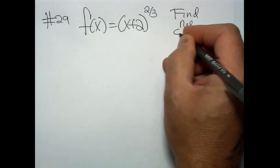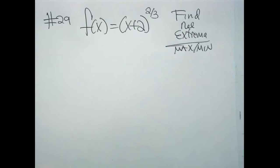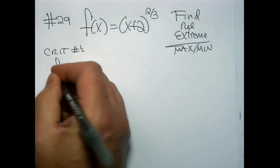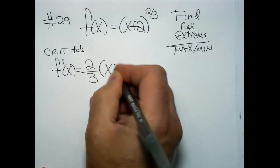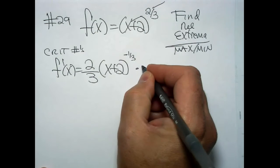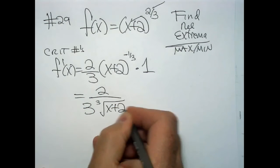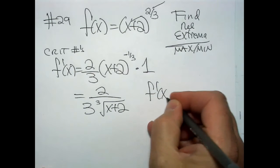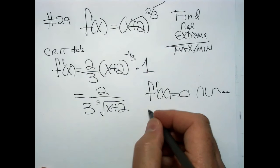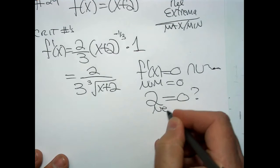Find the relative extrema — both maxes and mins. Let's find f prime. The two-thirds drops down, deduct one from the exponent giving negative one-third, and chain rule says multiply by one. So f prime = (2/3)(x + 2)^(−1/3). For critical numbers where f prime = 0, set the numerator to zero. But the numerator is 2, which is never zero — so we don't get any hills, valleys, or flat spots from that.